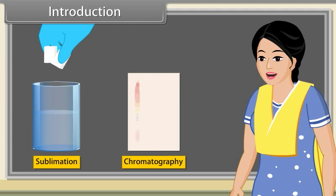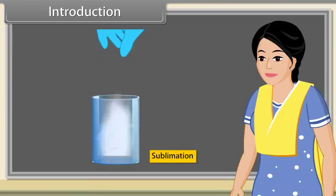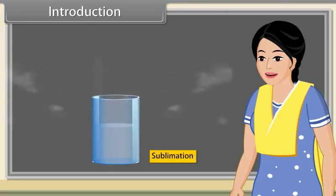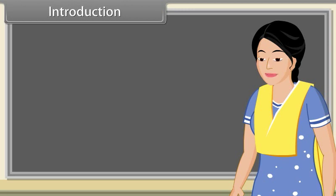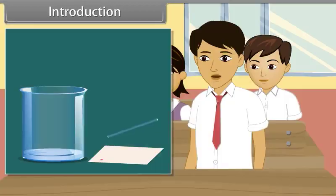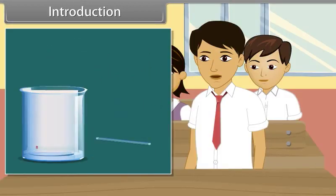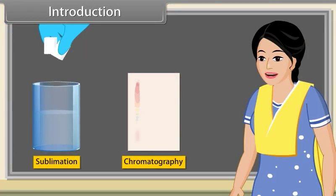A student asks: Teacher, what is sublimation? Sublimation is the process in which solid directly converts to vapour state without passing through liquid state upon heating. Now can anybody tell me what is chromatography? Chromatography is a technique used to separate and analyse a mixture of chemicals. Very good, Aryan.